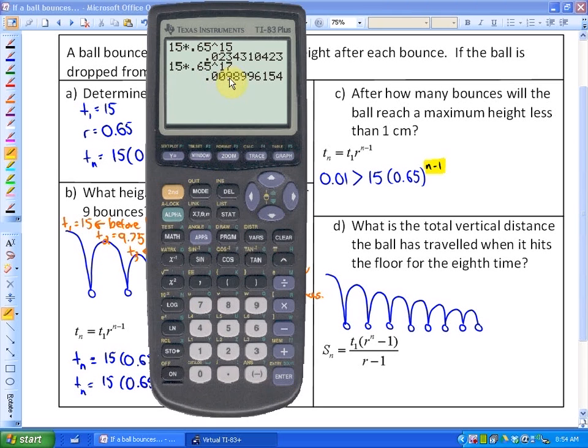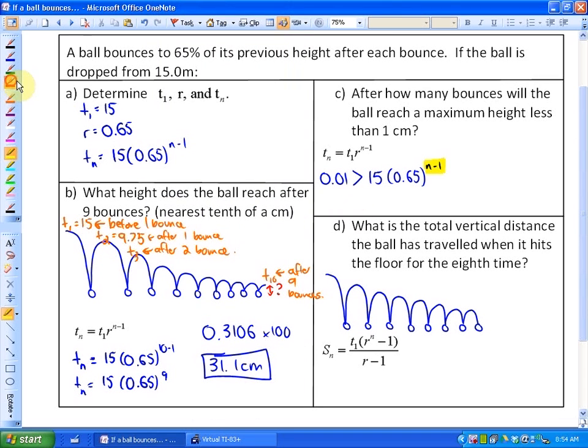That is just under 1 centimeter. It's 0.9 of a centimeter. So that is when this exponent is 17. So by guess and check, we found out that this is 17. So in other words, n minus 1 is 17, which means that n would be 18.